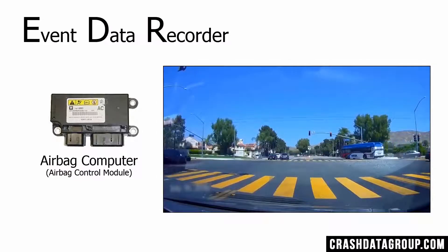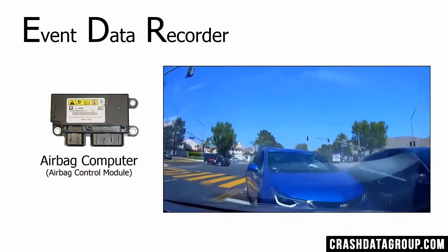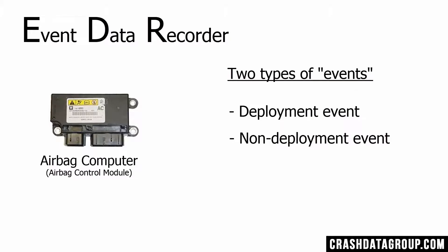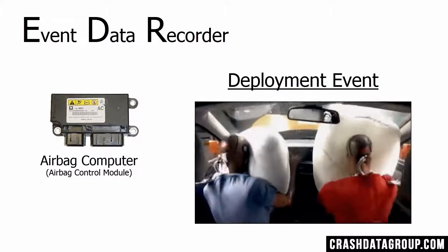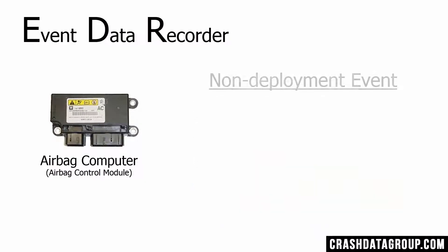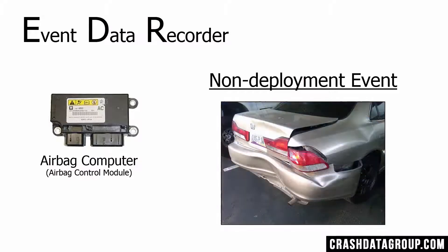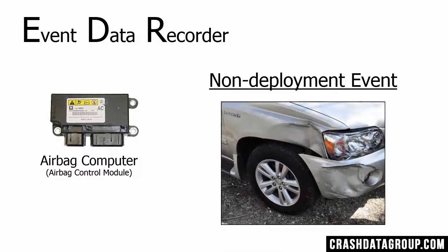EDRs do not constantly record data. An event, typically the result of a crash, must occur to trigger the EDR to record data. There are two types of events that will cause this to happen: a deployment event and a non-deployment event. A deployment event occurs when a safety system in a vehicle is deployed, the most common of which is an airbag. A non-deployment event occurs when a vehicle experiences a very sudden speed change, most typically from a crash, that meets a trigger threshold less than what is required to deploy an airbag.